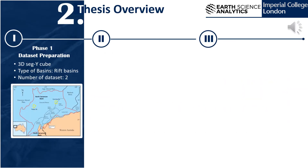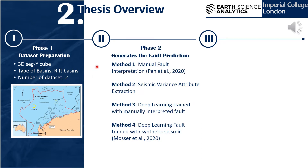As an overview, 3D seismic cubes of two rift basins are used for this analysis. The aims are to compare two areas of rift basin and to compare the performance of deep learning fault prediction with conventional methods. Faults are predicted using four methods: manual fault interpretation, seismic variance attribute, and two types of deep learning — method 3, trained with manual fault interpretation, and method 4, trained with synthetic seismic.